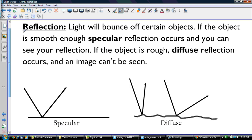The next thing we talked about was reflection. The light will bounce off certain objects. If it's smooth enough, specular reflection occurs, and you can see your reflection. So that would be like, you know, you're looking at a pond kind of thing. If the object is rough, diffused reflection occurs. So that's like if you're on a pond on a windy day, you're not going to look down and see your reflection.